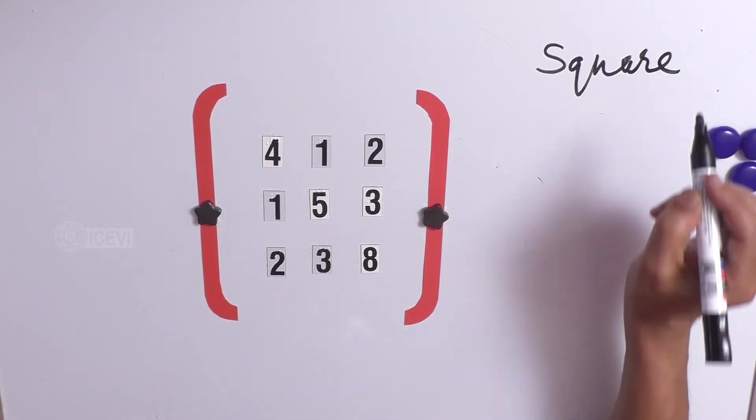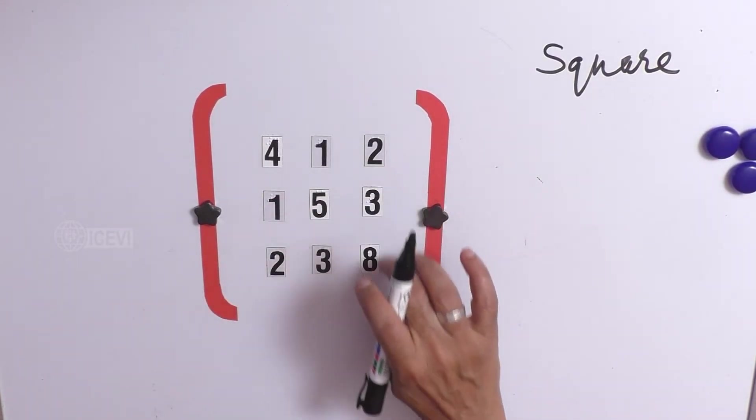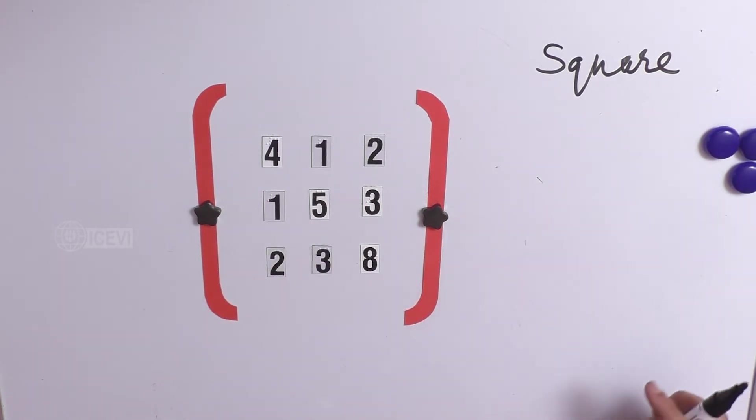This type of matrix is called as a square matrix. Because it resembles the shape of a square.